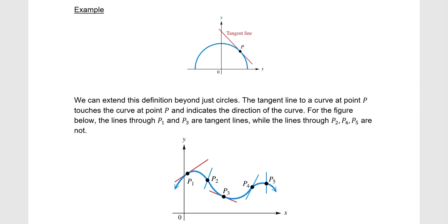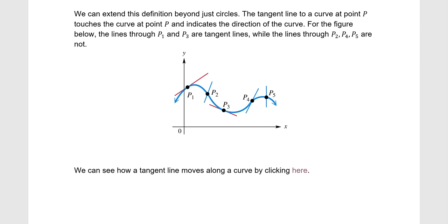Going a little past circles with tangent lines — we have this new curve here in blue. At P1 and P3, those points have the correct tangent line drawn because it's in the direction of the curve. Whereas P2, P4, and P5 are not tangent lines because they're not in the direction of the curve. P4 looks close, but the tangent line there would actually be slightly different.